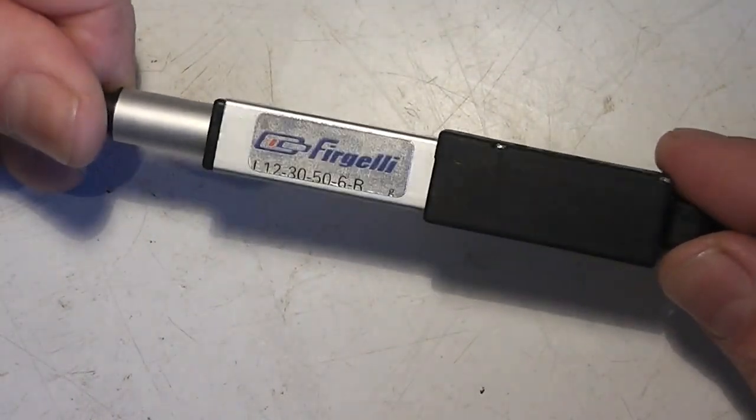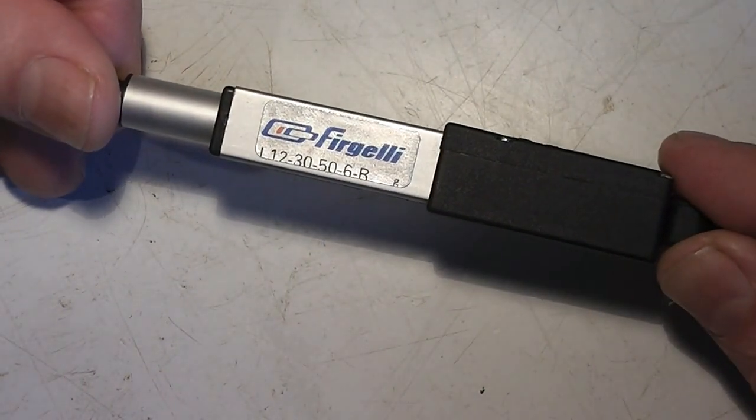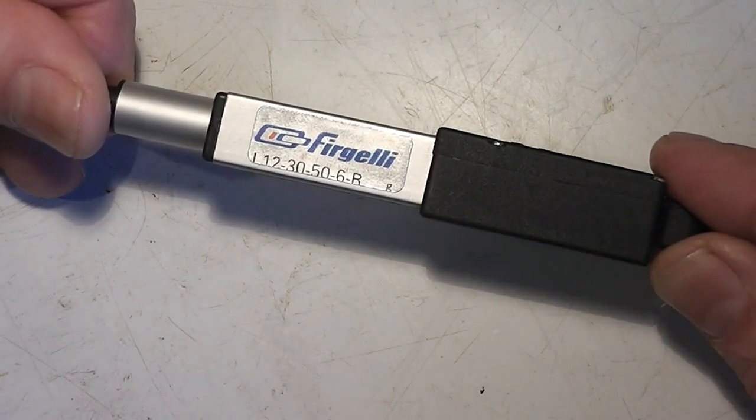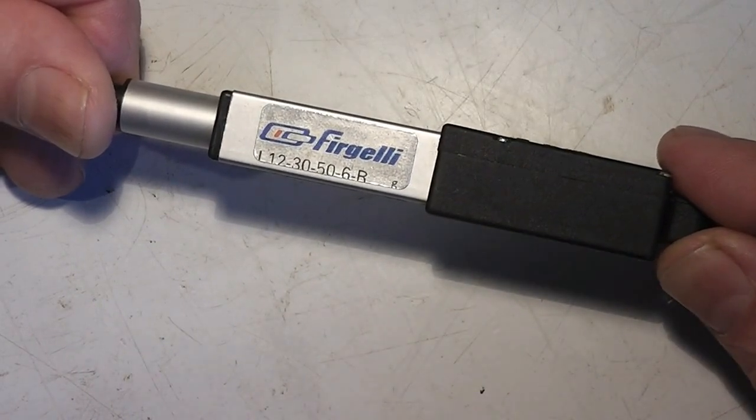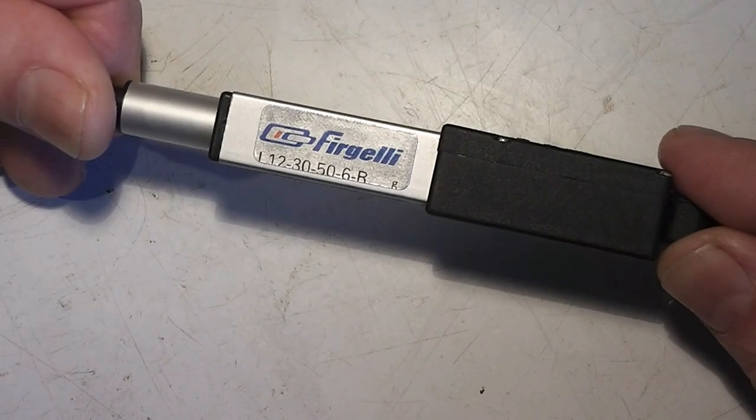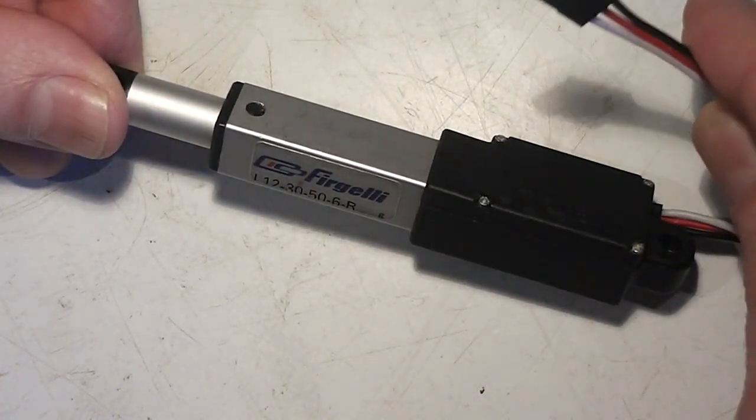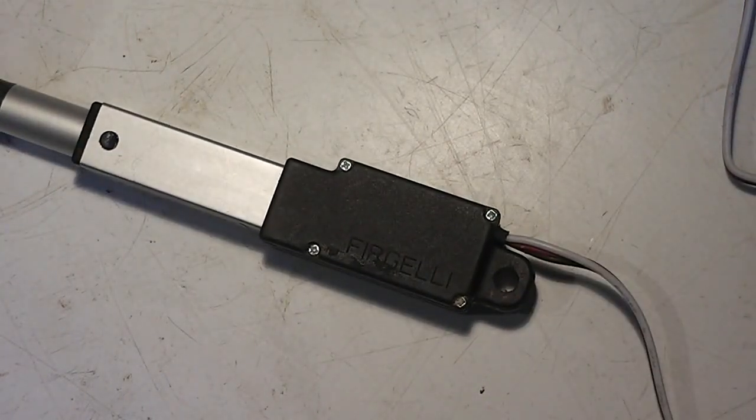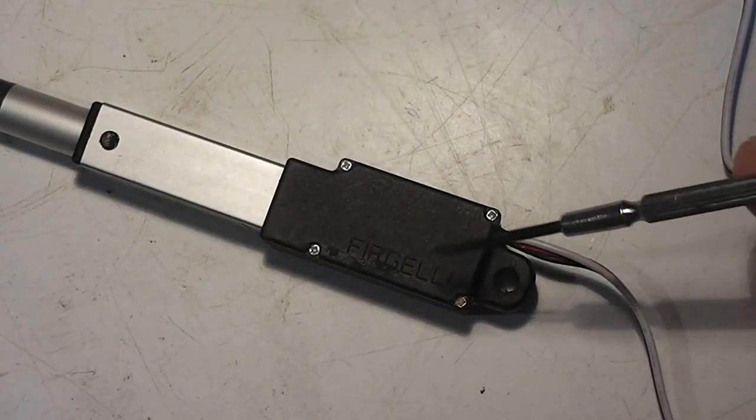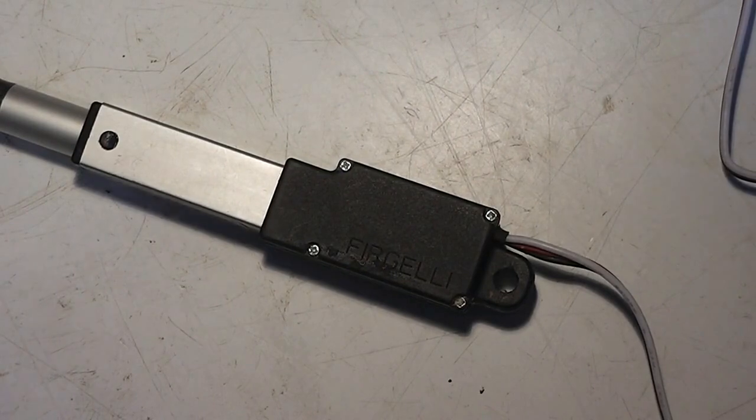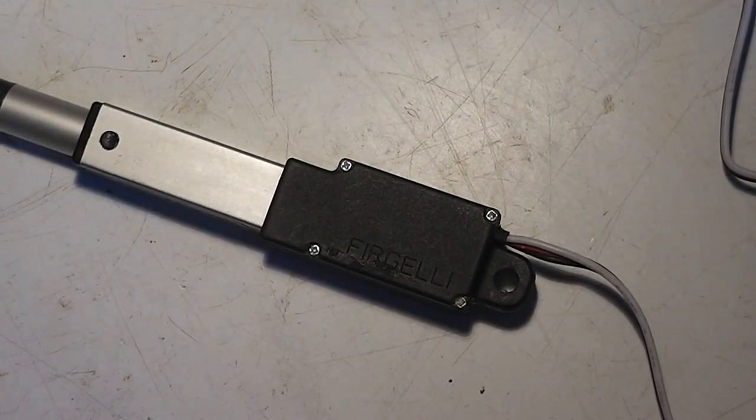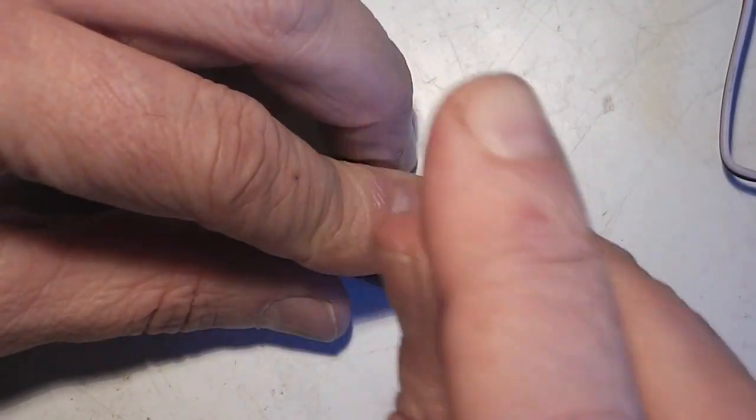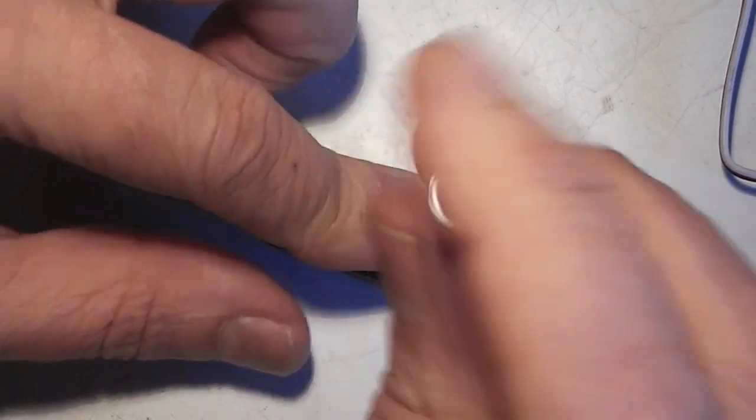On this one here you can see some numbering on the side of the sticker there. It says L12 which is the model. 30 is 30mm stroke. 50 is 50 to 1 reduction. 6 is 6 volt. I don't know. It might be signifying the plug. I'm not entirely sure. Right, before we crack it open. As soon as you do this, you are voiding your warranties and things like that. So there is no crying, going back crying to mama about it. Once you take it apart, it's all on your own back.